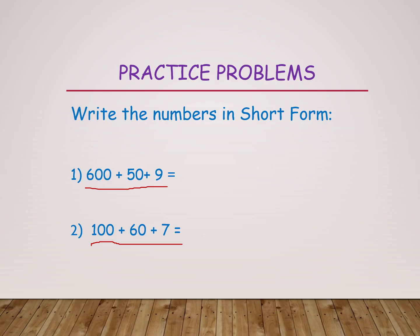Easy turn kids. I will tell the answer. Here 600 plus 50 plus 9 becomes 659. What is the short form of this number? 659. And next one, 100 plus 60 plus 7. What does that become? 167. It is the short form of this big value.